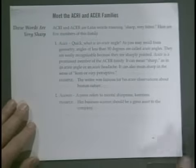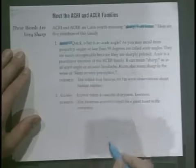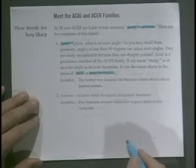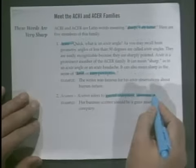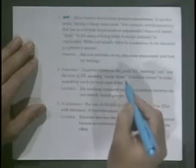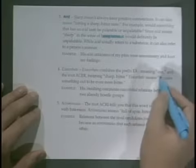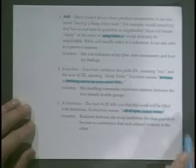Now we look at the acr and acer families — these mean sharp or very bitter. Something that is acute, you may know this from math, is a sharp angle; acute can also mean keen or very perceptive, very smart. Acumen means mental sharpness or keenness. Then we have acid, which is sharp — something that is acidic is very sharp or bitter. Exacerbate means literally to make something even more bitter, to make it worse. Acrimonious means full of spite, full of bitterness.